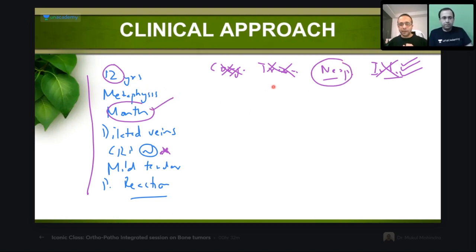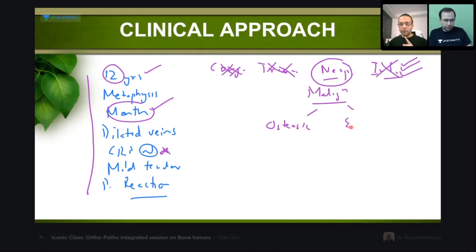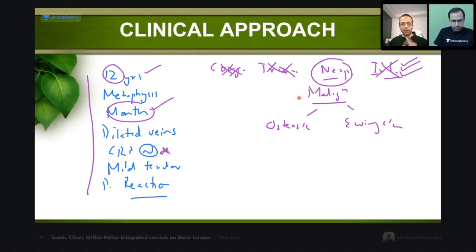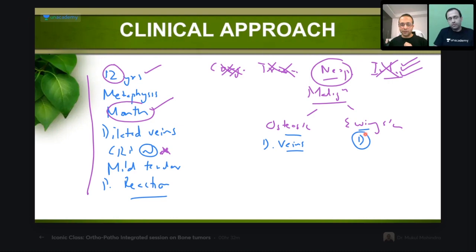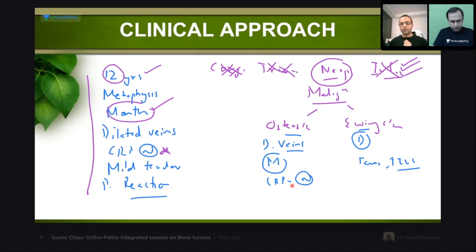One month history again tells me it is something malignant. I am caught between osteosarcoma and Ewing's sarcoma — both can occur in this age group. Ewing's classical age: 5 to 15 years. Osteosarcoma has a bimodal age pattern. Differentiating: dilated veins are classically seen in osteosarcoma. Ewing's would be diaphyseal — but this is metaphyseal, which again points towards osteosarcoma. No fever, no raised TLC, CRP normal — all point towards osteosarcoma.